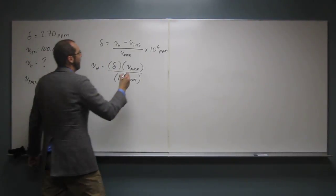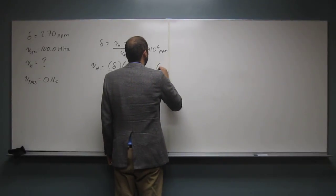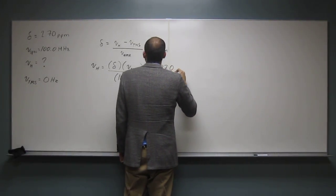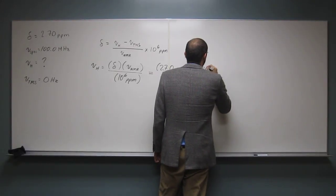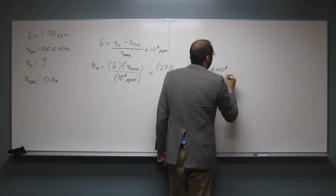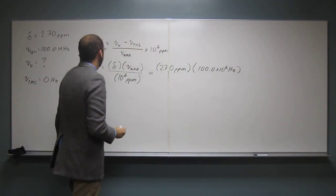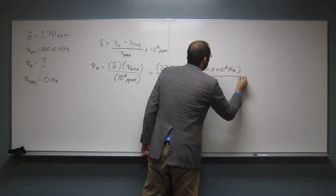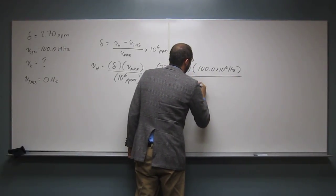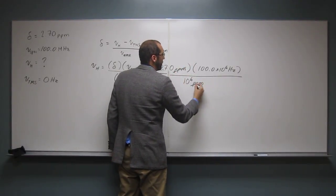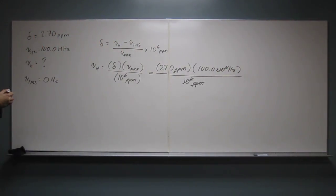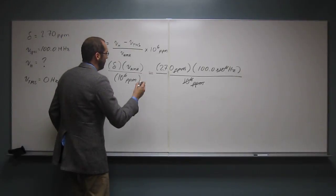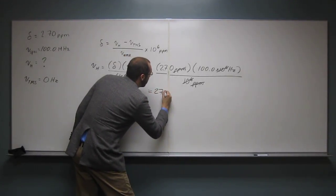So now it's just essentially a plug and chug. So 2.70 PPM times 100.0 times 10 to the 6 hertz, and then we divide all that by 10 to the 6 PPM. Notice PPM cancels there, 10 to the 6 cancels there. So what do we get? 2.70 times 100. So what would you expect? I don't even need to calculate it. 270. 270 hertz.